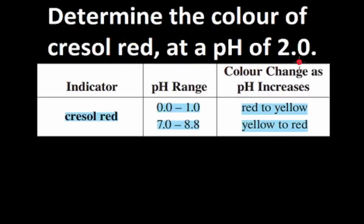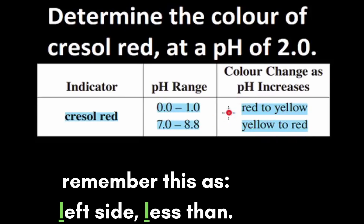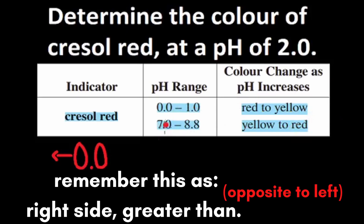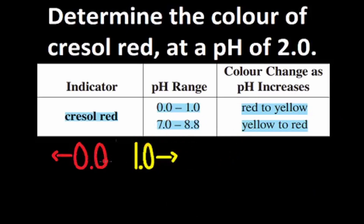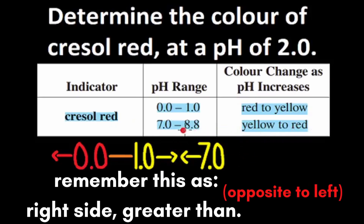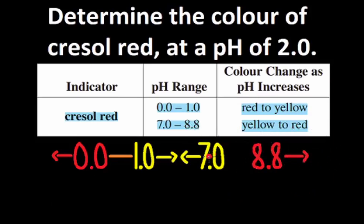Let's tackle this one. Determine the color of crystal red at a pH of 2.0. This is the information we have for the indicator. The pH range is 0.0 to 1.0 and 7.0 to 8.8. The color change as pH increases is red to yellow and yellow to red. For the first range: 0.0 and red are both on the left side, so all pHs less than 0.0 will be red. 1.0 and yellow are both on the right side, so all pHs greater than 1.0 will be yellow. In between 0.0 and 1.0, we get a mix of red and yellow, which is orange. For the second range: 7.0 and yellow are both on the left side, so all pHs less than 7.0 will be yellow. 8.8 and red are both on the right side, so all pHs greater than 8.8 will be red. In between 7.0 and 8.8, we'll get orange because that's the mix of yellow and red.